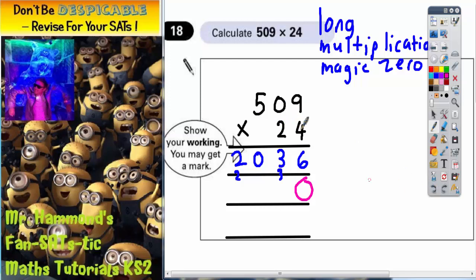So first thing is 2 nines. 2 nines are 18. Put the 8 in, carry the 1. 2 zeros are 0, plus the 1 is 1. And 2 fives are 10.